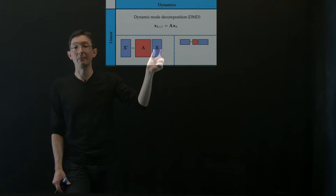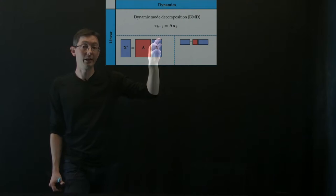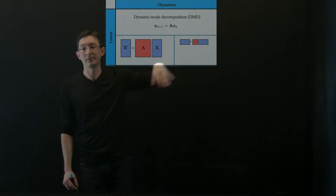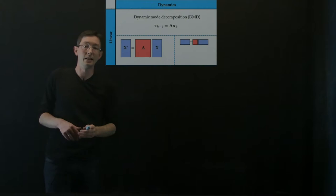So what I might do is I might compute the dominant coherent structures of this data with the singular value decomposition, and then do the regression on those reduced coordinates. So that's also called in fluids proper orthogonal decomposition. And so I might do my DMD regression on POD coefficients. Again, standard DMD.